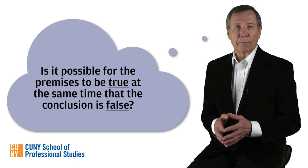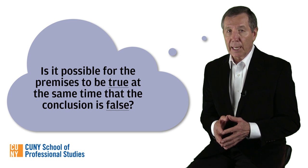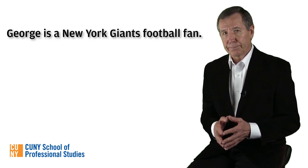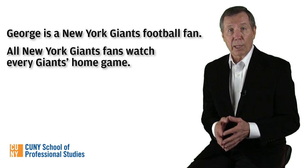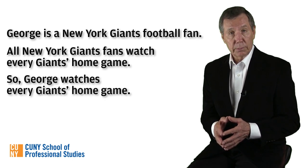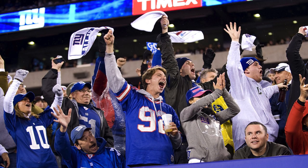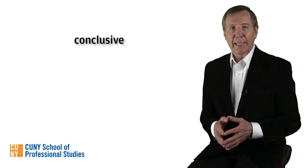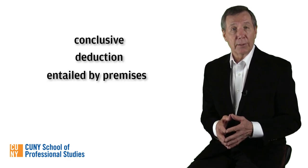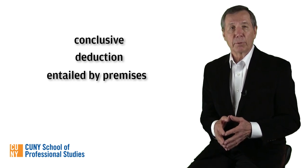Take a look at this argument and ask yourself whether it's possible for the premises to be true at the same time that the conclusion is false. George is a New York Giants football fan. All New York Giants fans watch every Giants home game. So, George watches every Giants home game. On the assumption that the premises are true, it's impossible that George does not watch all the Giants home games. He's a Giants fan, and if it's true that all New York Giants fans watch every Giants home game, then George most certainly is watching when the Giants play at home. So this inference is conclusive — it's a deduction whose conclusion is entailed by the premises; that is, it follows necessarily from their presumed truth.